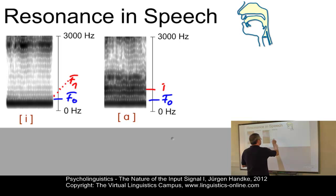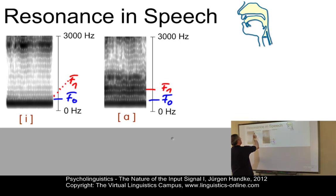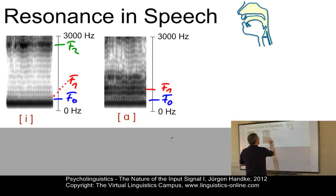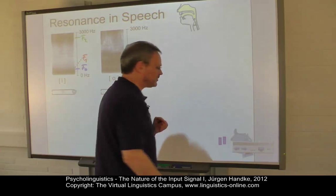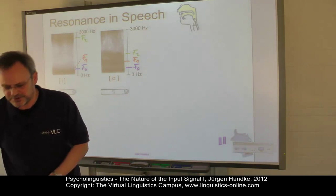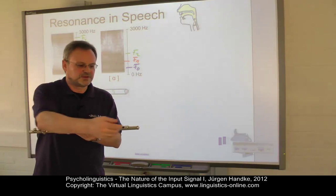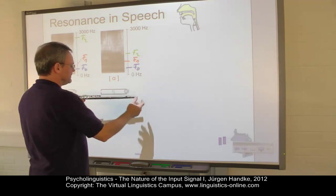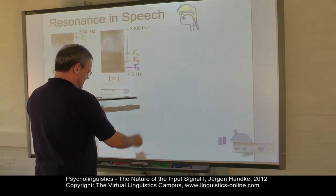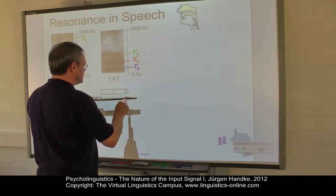Then we have our second formant F2, which in the E is extremely high, and in the example of R it is somewhere in the middle. How can we explain that? Let's imagine the vocal tract to be analyzed just like the resonating body of a flute. We have the sound input at one end of the flute and the orifice at the other end — exactly the same applies to the vocal tract: a sound input and an orifice as the sound output.